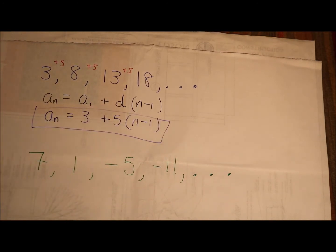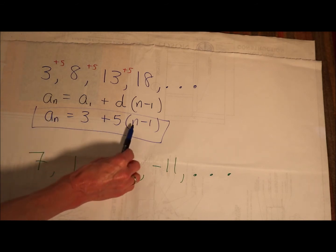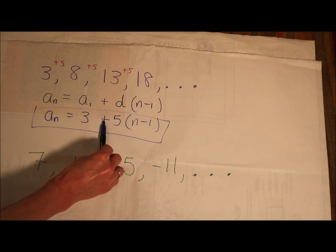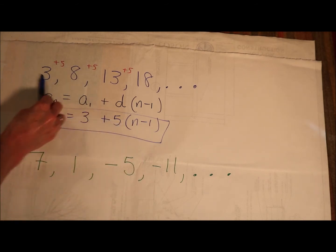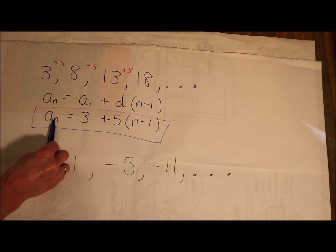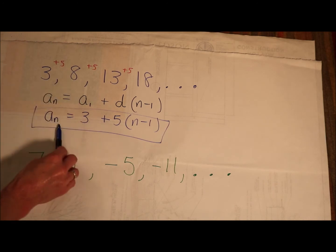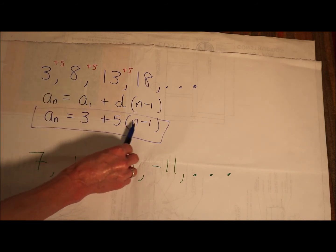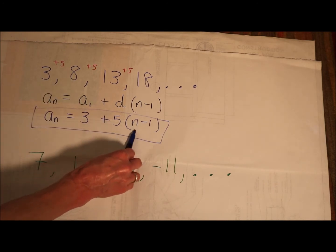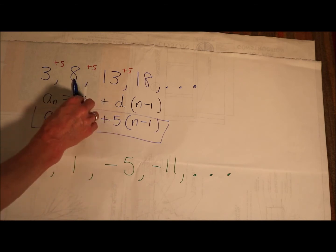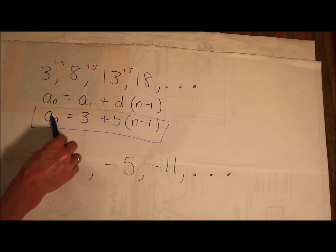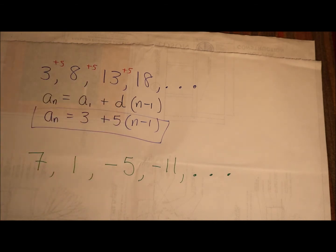Let's test — let's plug in 1: 3 plus 5 times 0 is 3. Let's plug in 2 for the second term: 3 plus 5 times (2 minus 1) — that's 3 plus 5, that's 8. If I plug in 3, you're going to get 13, and so on and so forth.